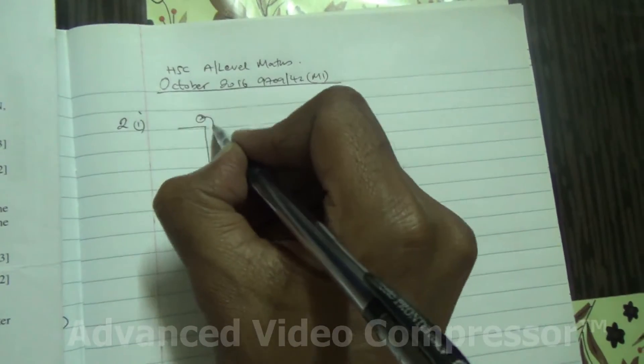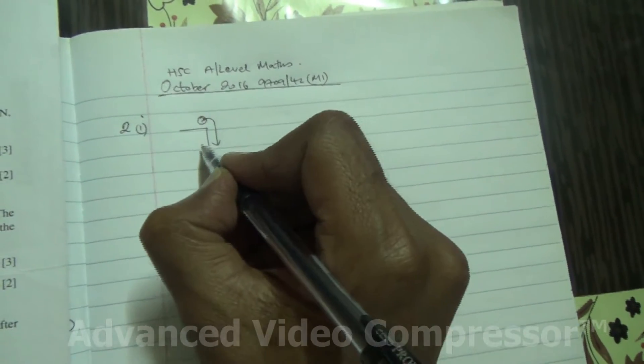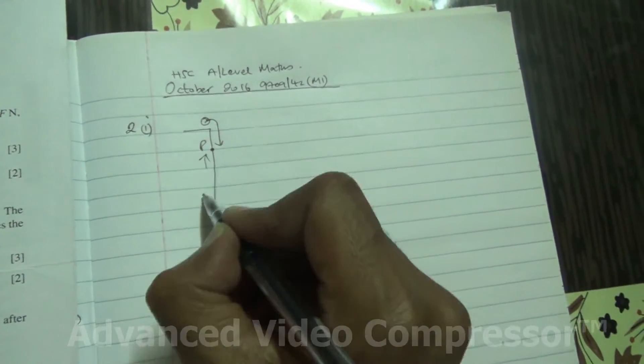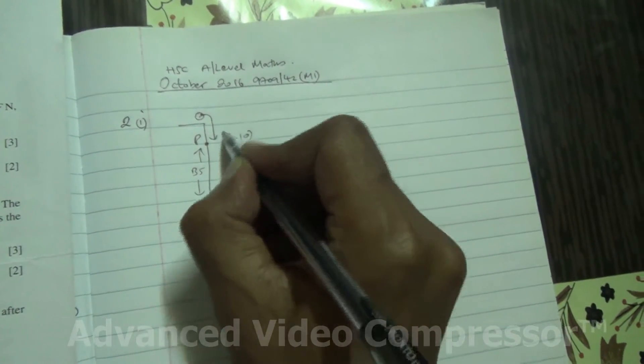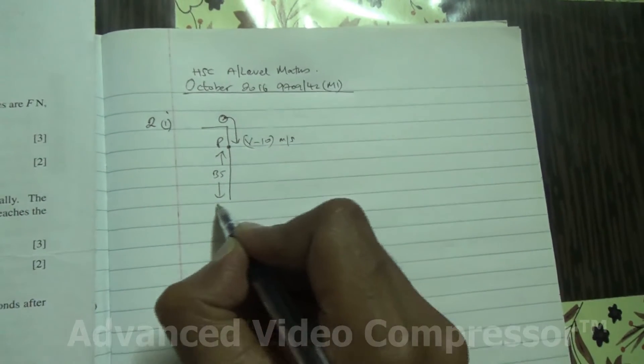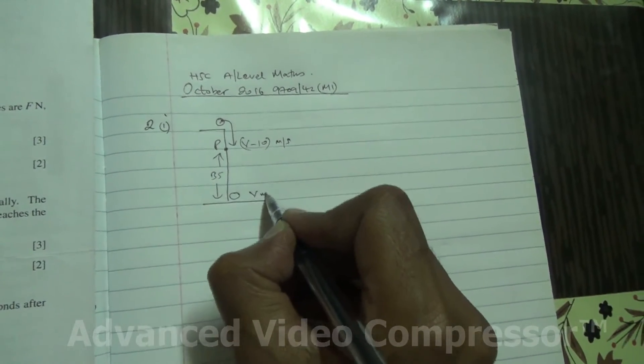Suppose that object is here. It's falling. It's passing through a point here and the point is p. This point is 35 meters above the ground. Here, the speed of the particle is v minus 10 meters per second. It hits the ground here with a speed of v meters per second.